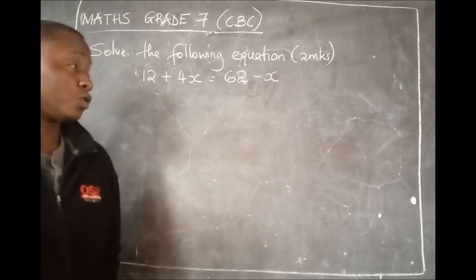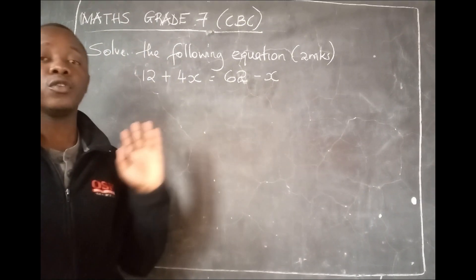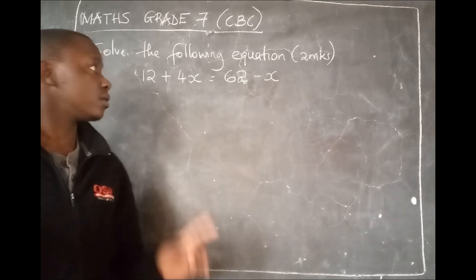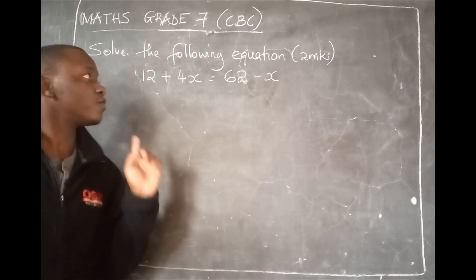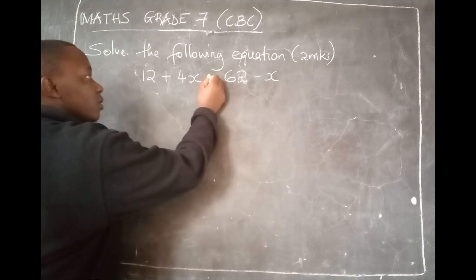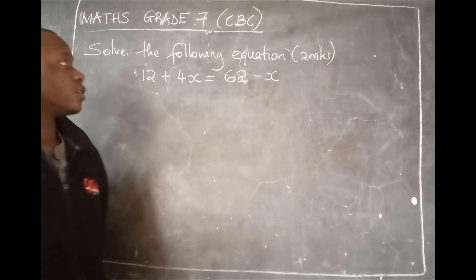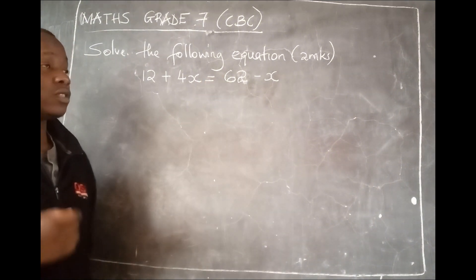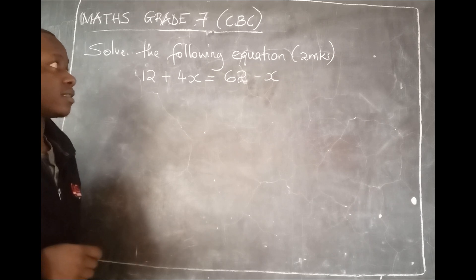Hello, let us say you are told to solve the following equation: 12 plus 4x equals 62 minus x. This equation is 12 plus 4x equals 62 minus x.